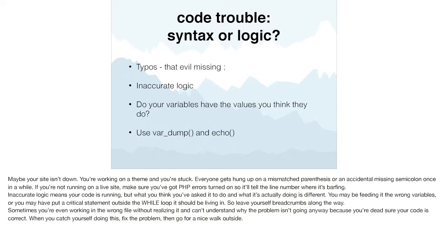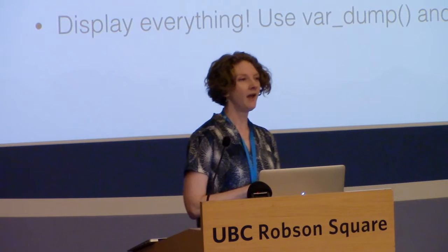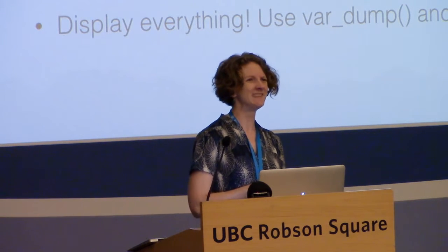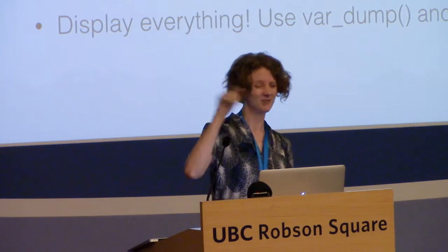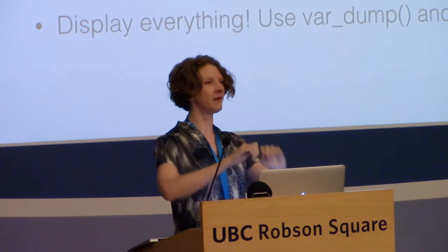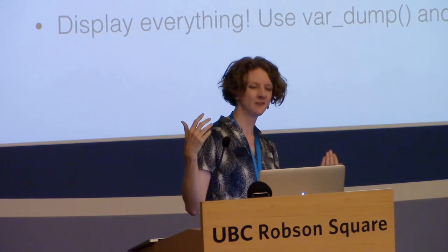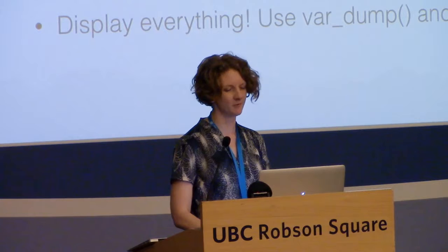You need to leave yourself breadcrumbs along the way — display what is in this array, print out variables before and after the loop, just to make sure the data you're passing through is actually what you're imagining it is. Sometimes it's even something like you're working in the wrong file without realizing it, and you can't understand why the problem isn't going away. When you catch yourself doing this, just fix the problem now that you've found it, then go outside, take a nice little walk around, look at the trees, and then come back to it. It means you need a break.